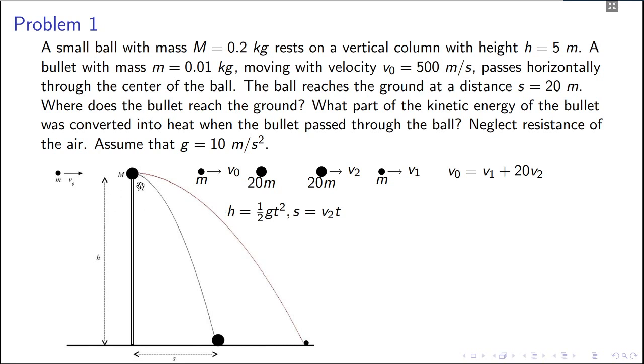u in the vertical direction will be zero, so it's just half gt square. And s you can write as v2 into t. You have to find this distance x, so what is x? x is v1 into t, right, so v1 is the velocity of bullet into t.